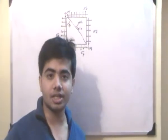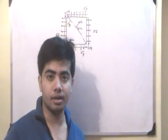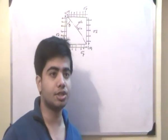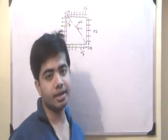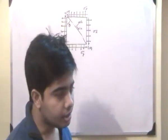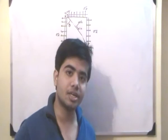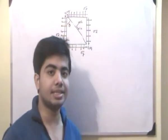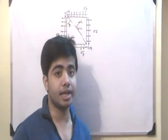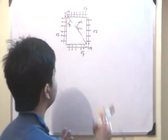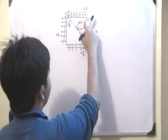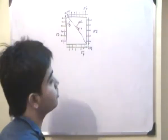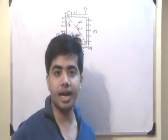If you can construct a Mohr's circle — the circle was discovered by Mohr and hence Mohr's circle — what we can basically achieve is we can find out the different values of sigma n and tau n at different values of theta. Let us see how to construct a Mohr's circle.